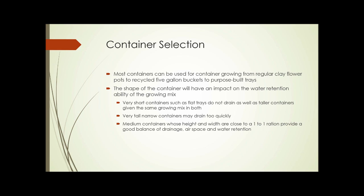Container selection. Most containers can be used for container growing, from regular clay flower pots, to recycled five-gallon buckets, to purpose-built trays. However, the shape of the container will have an impact on the water retention ability of the growing mix. Very short containers, such as flat trays, don't drain as well as taller containers, given the same growing mix in both.